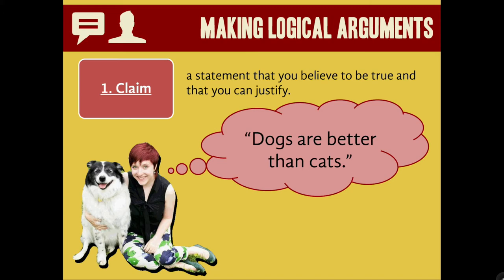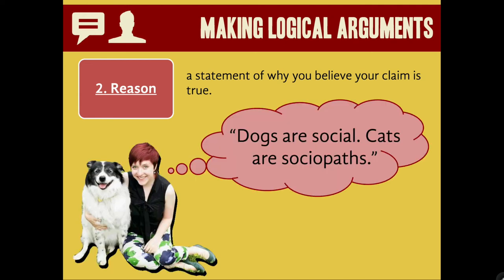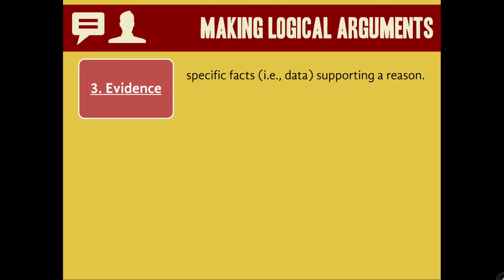Notice how the statement doesn't necessarily have to be factually bedrock true — I think dogs are empirically better than cats, but really there's no way to judge this. However, if I back my claim up with reasoning and evidence, it becomes more compelling and my argument becomes a little more watertight. A reason is a statement of why you believe your claim to be true. Well, I think that dogs are better than cats because dogs are social and cats are sociopaths. We're getting closer to an airtight argument, but what we need now is some evidence to back it up.